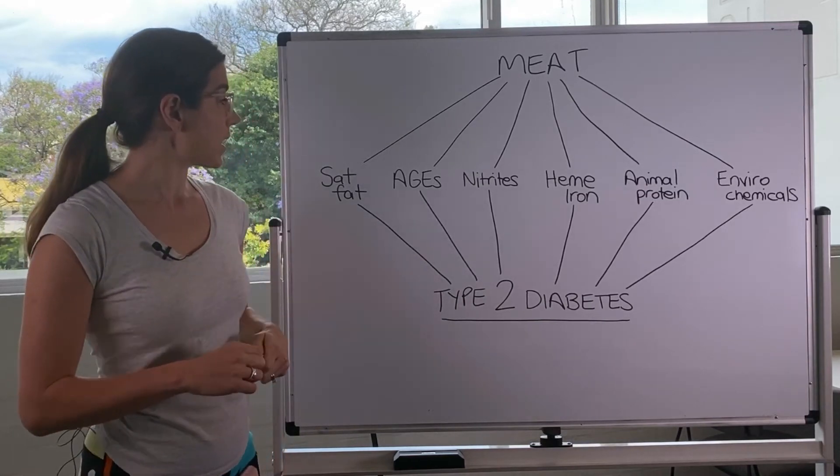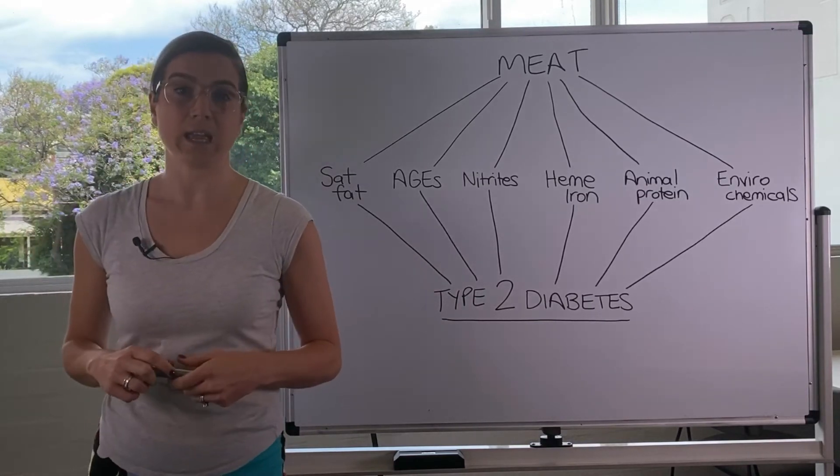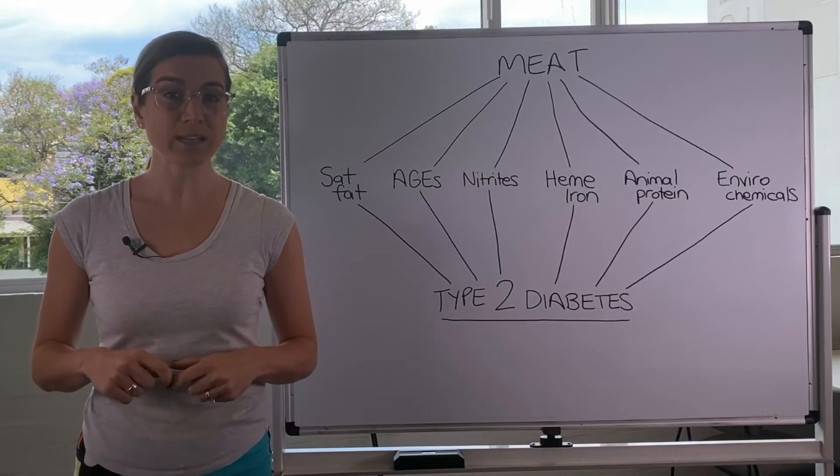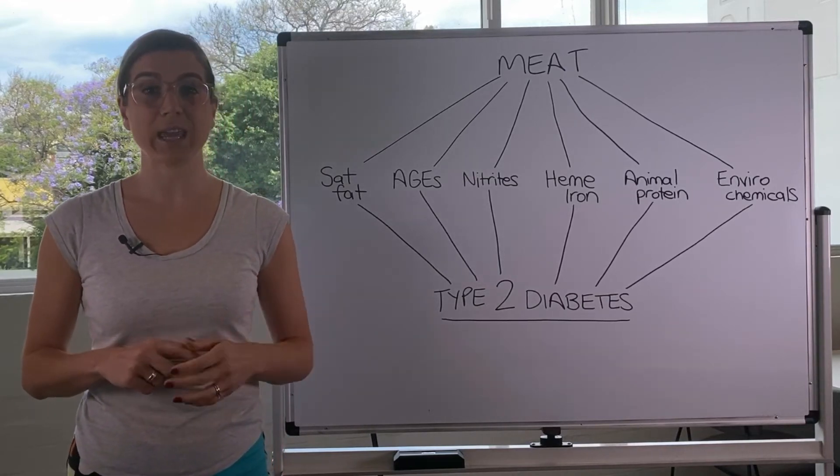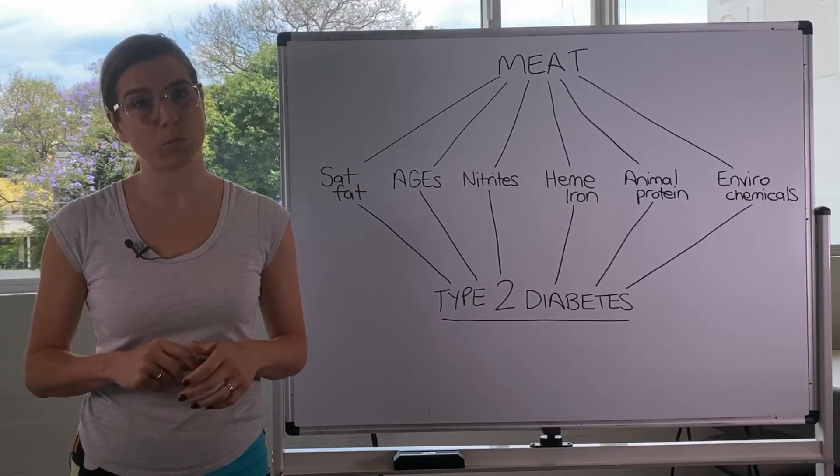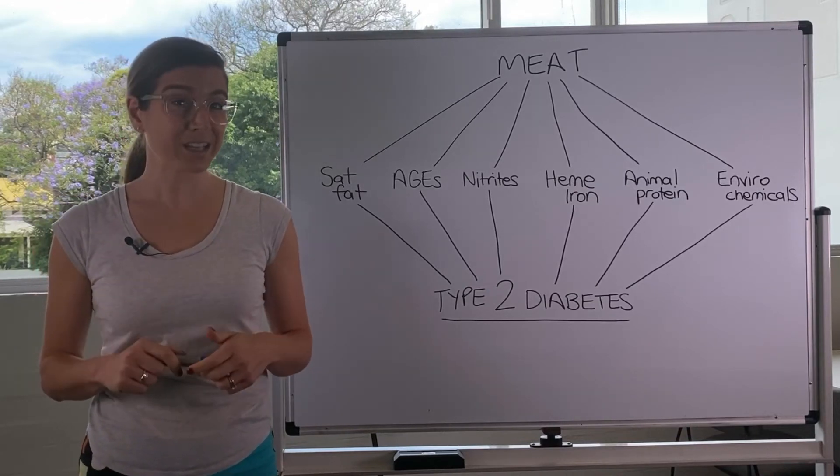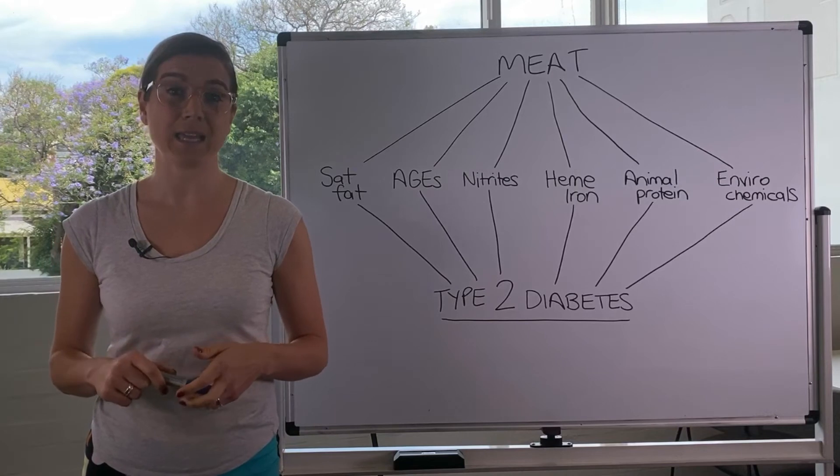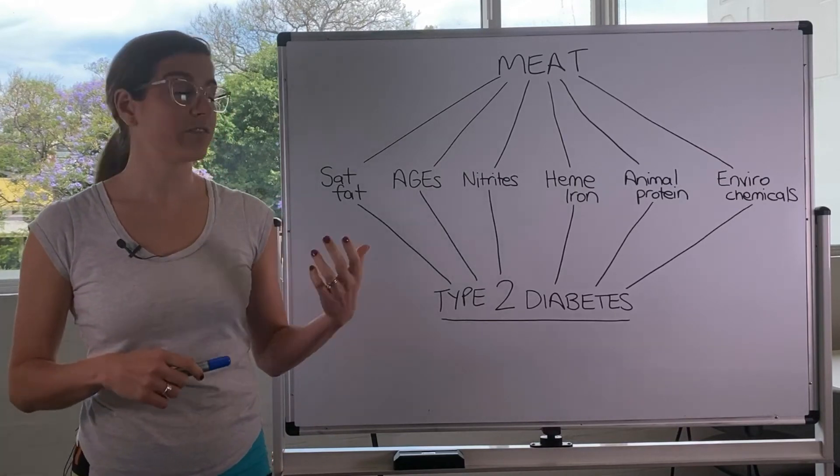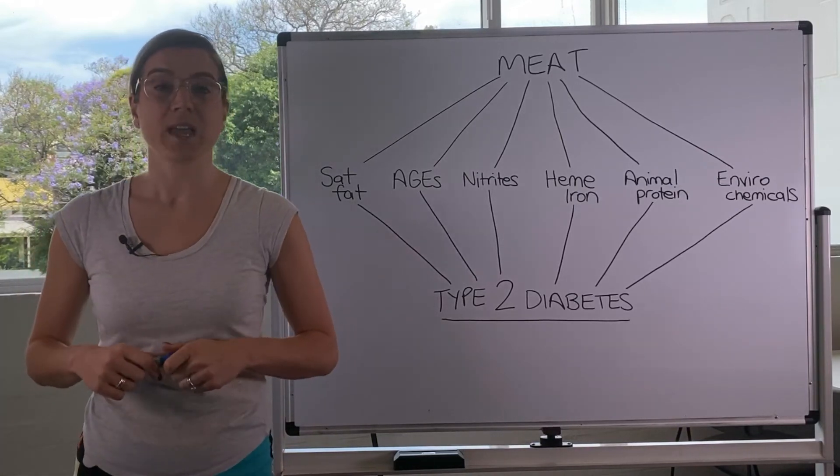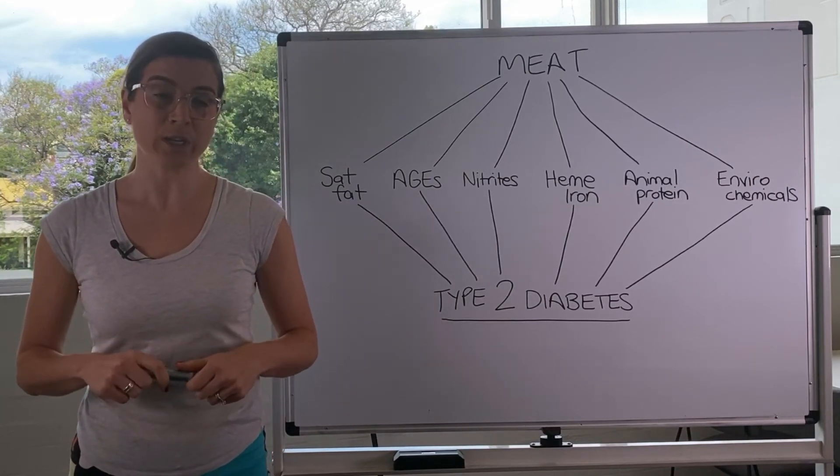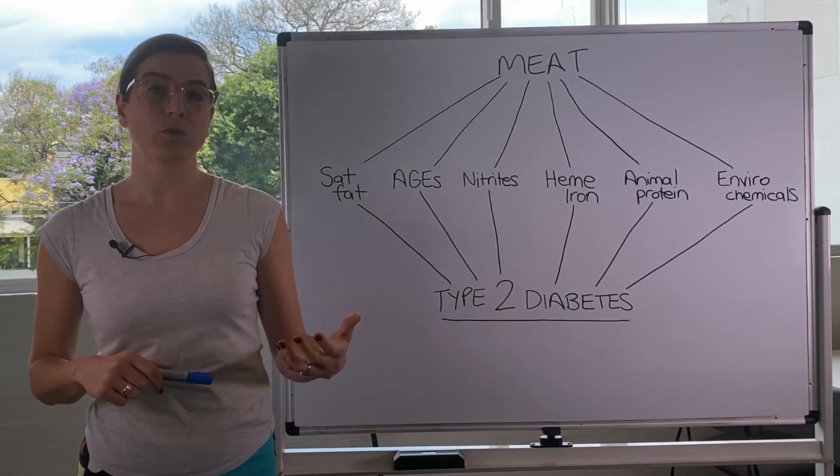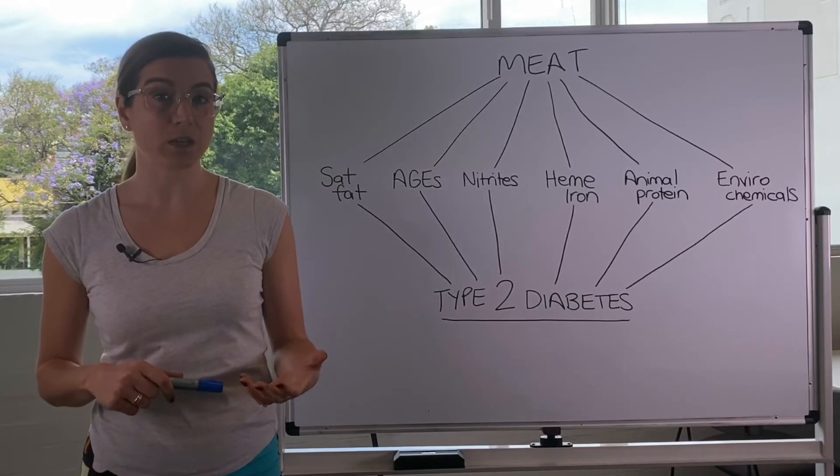So next are advanced glycated end products. Advanced glycated end products are basically the result of a chemical reaction when you cook animal proteins, particularly at high and dry heat. These advanced glycated end products can trigger oxidative stress and inflammation in the body, which can then lead to insulin resistance and type 2 diabetes.